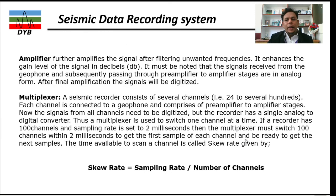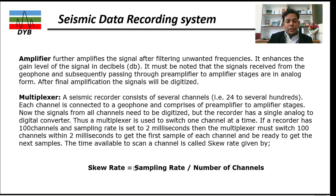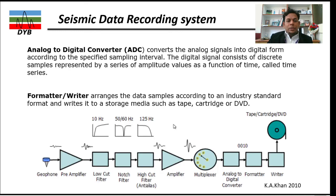The amplifier takes the input signal and enhances its amplitude. The multiplexer will be discussed in detail in the second video, so we will skip it here. We then come to the analog-to-digital converter, which takes the signal recorded in analog form and converts it into digital. Finally, the formatter and writer stage outputs the data in the required format.